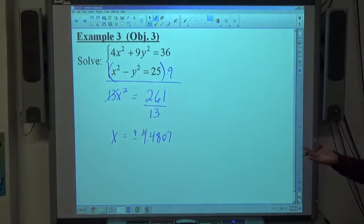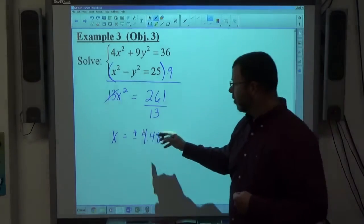x squared comes out to 4.4807. Just like the last problem, x equals either plus or minus 4.4807. Regardless of which one that is, x squared is still going to be 261 over 13.